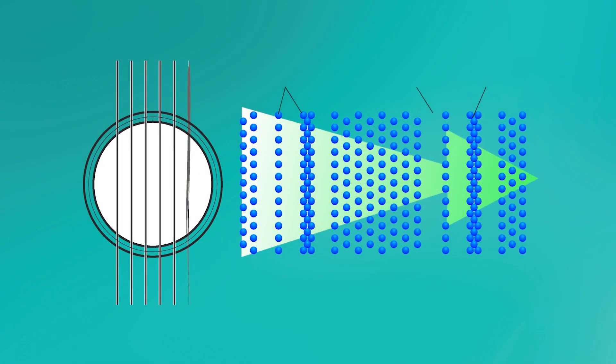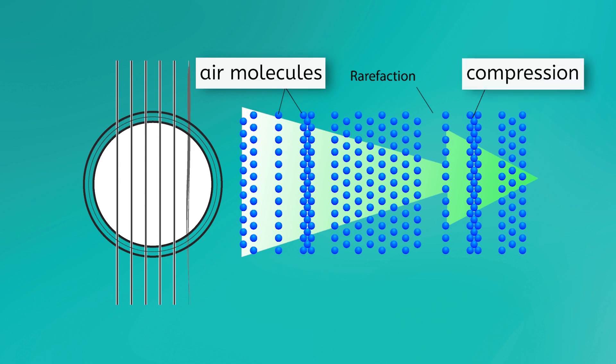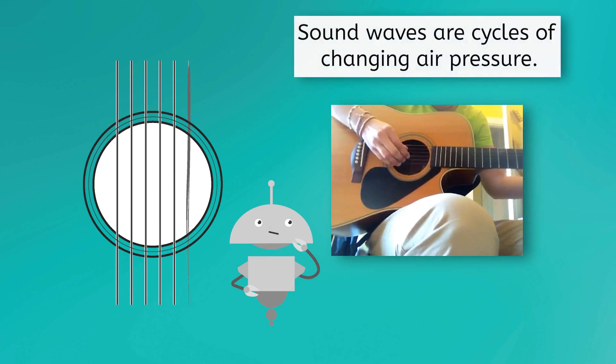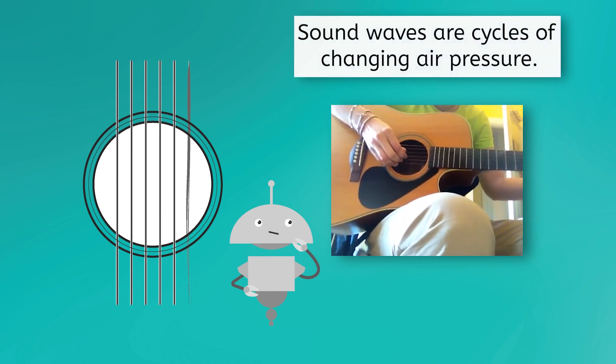This movement of particles in sound waves occurs in a pattern of compressions, where the particles are close together, and rarefactions, where they are spread apart. What is the medium in this sound wave? Air molecules. The vibration from the string causes the air molecules to move in a repeating pattern of compressions and rarefactions, giving us sound waves like these, which are really just cycles of changing air pressure.